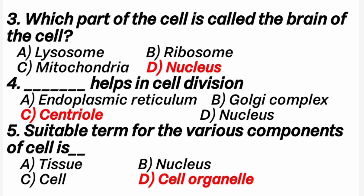Third question: which part of the cell is called the brain of the cell? Answer is option D — nucleus, because the nucleus controls all the activities of the cell. Fourth question: what helps in cell division? Answer is option C — centriole. Centrioles are present in animal cells but not plant cells. The centrioles help in the formation of the spindle fibers that separate the chromosomes during cell division.